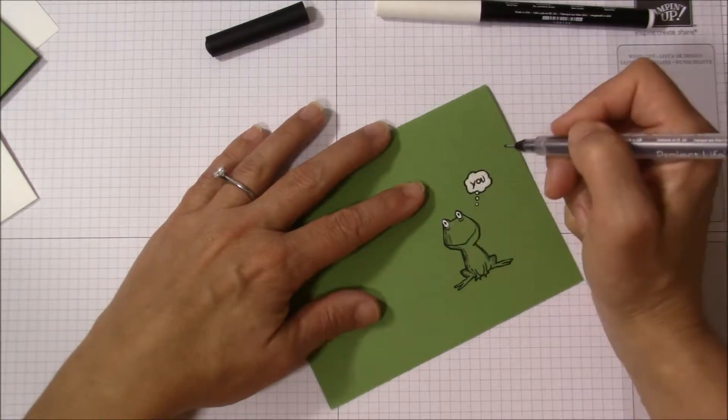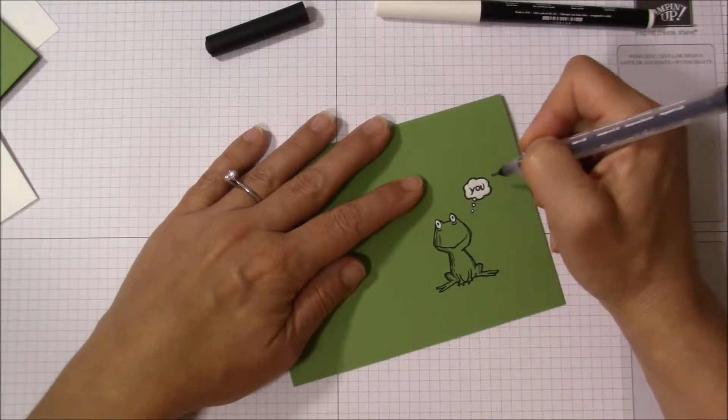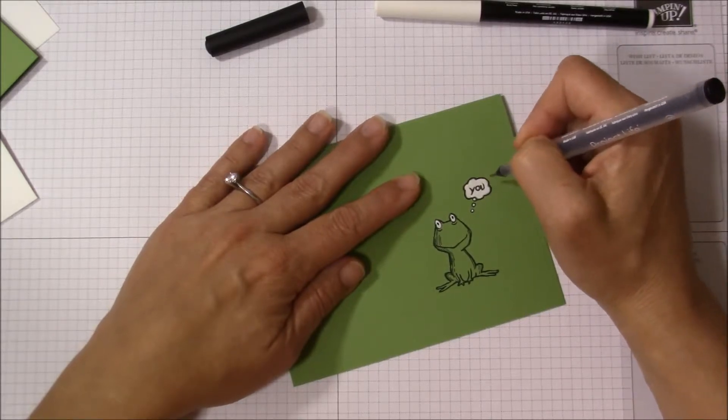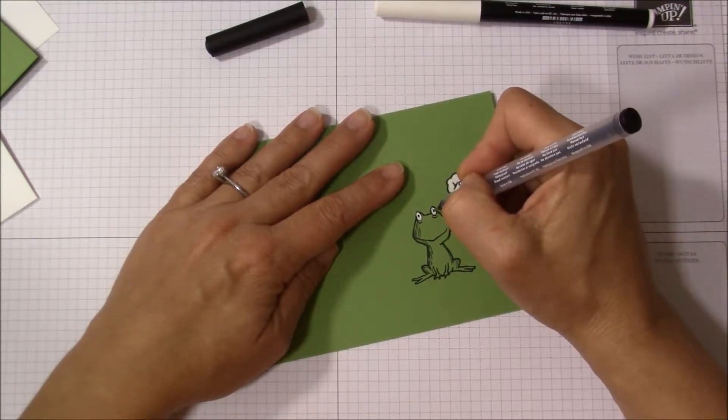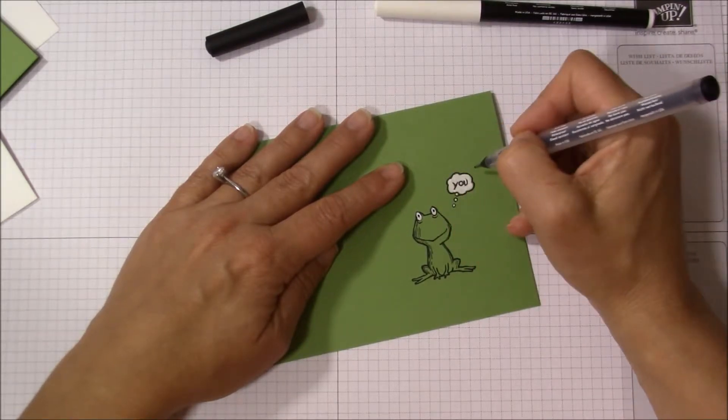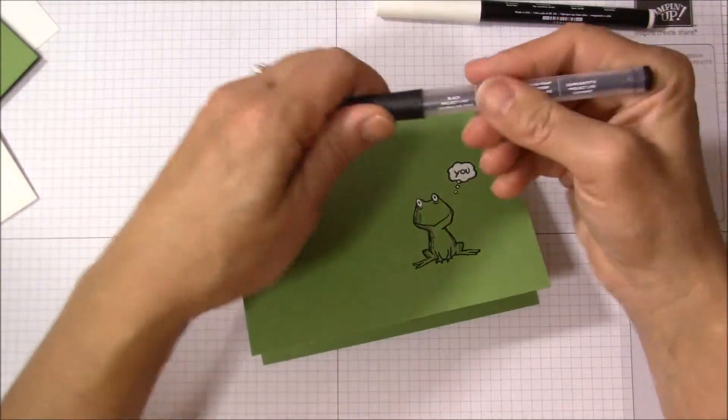Now one thing to keep in mind is that once you do this, if you are to go back with the white chalk marker, it will smear with the black. This pen will smear, so just be super careful to get it where you want it. Okay, that looks good.